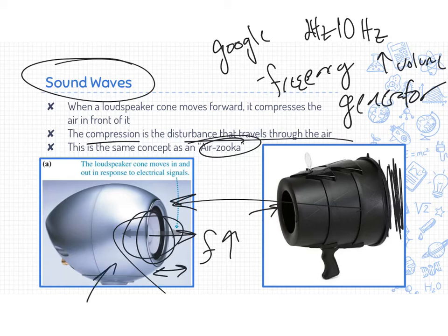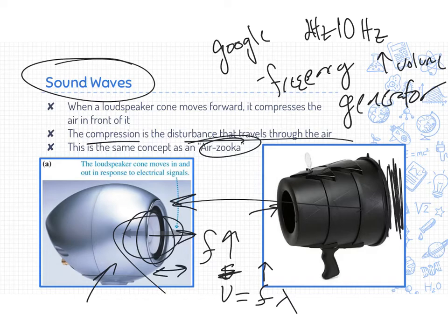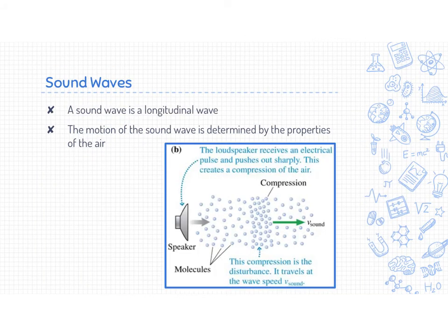Now we know there's a fundamental equation we're going to talk about quite a bit: velocity equals frequency times wavelength. Velocity is the speed of sound, which is governed by the medium, so that doesn't change. As frequency goes up, that wave travels out faster and faster, so the wavelength gets shorter and shorter. Sound is a longitudinal wave — it goes in and out.